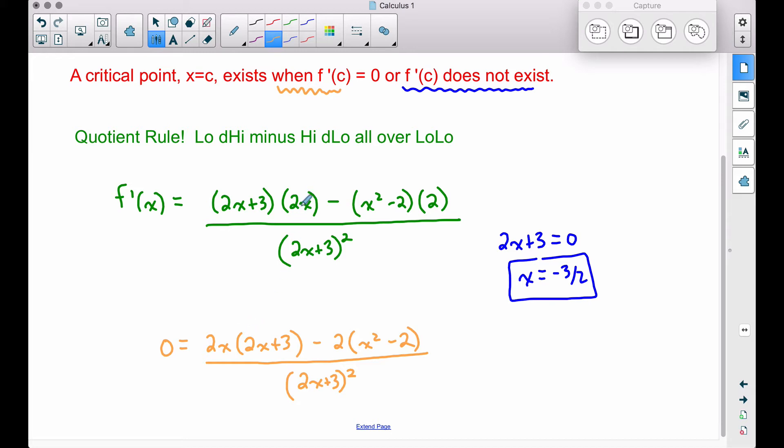Now I just rewrote the 2x out front, I rewrote that 2 out front there, and let's go ahead and distribute here and then we will talk about how to handle this denominator. We can simply multiply by it or quite honestly ignore it since we've already identified that critical value there that makes the denominator equal to zero.